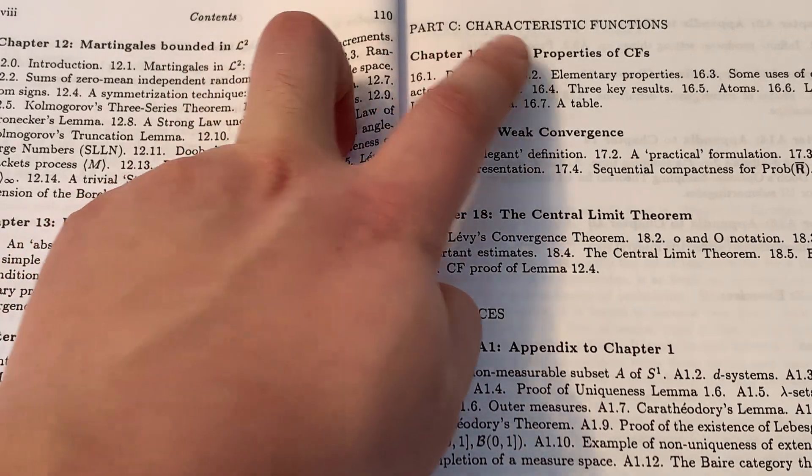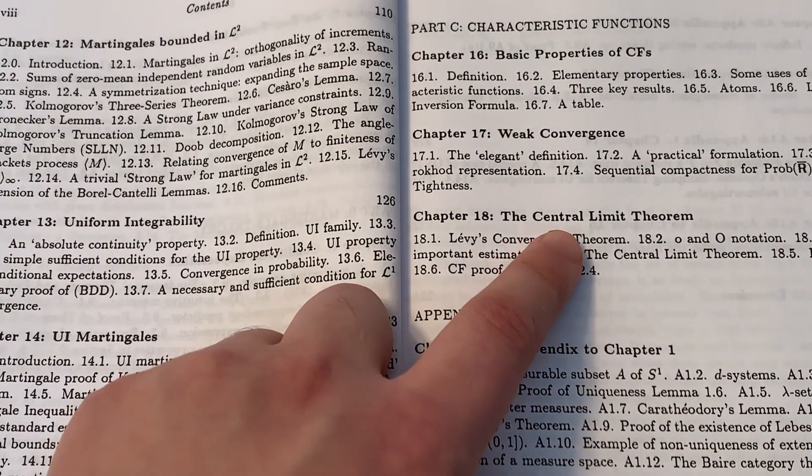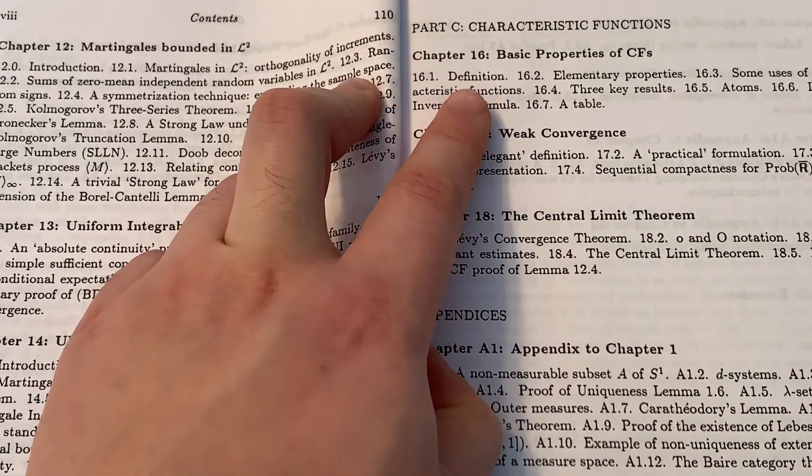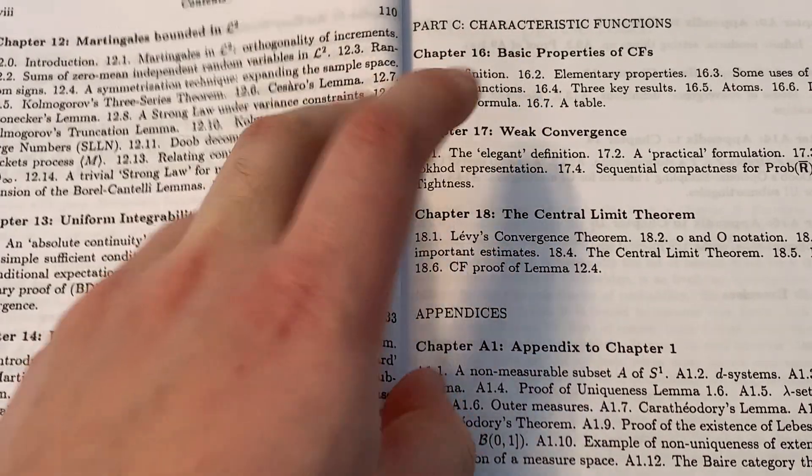is on characteristic functions. The goal is to prove the celebrated central limit theorem. Characteristic functions are essentially Fourier transforms in probability theory.